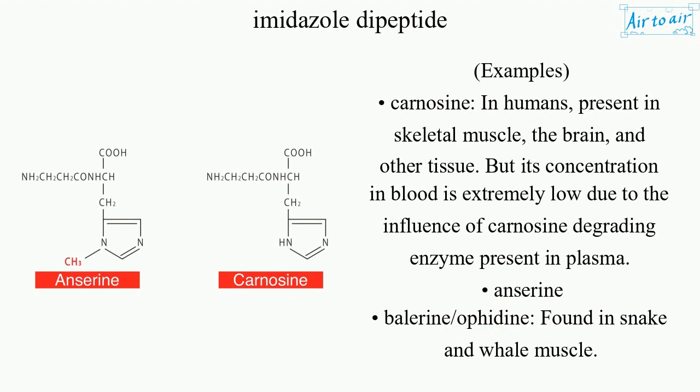Examples: carnosine. In humans, it is present in skeletal muscle, the brain, and other tissue. But its concentration in blood is extremely low due to the influence of carnosine-degrading enzyme present in plasma. Other examples include serine, ballerine, and offidine,